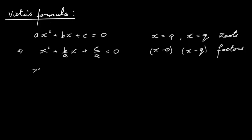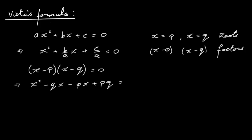We have x minus p multiplied by x minus q equal to zero. Multiplying out: x squared minus qx minus px plus pq equals zero. Factorizing the x terms gives us x squared minus (q plus p)x plus pq equal to zero.